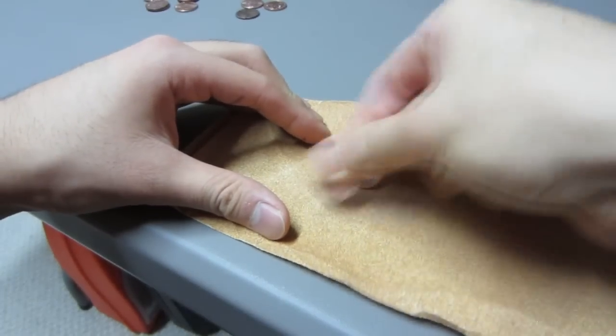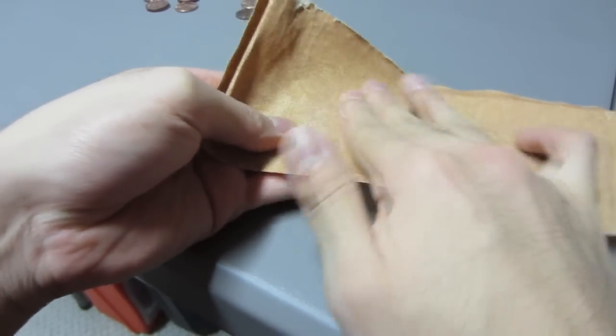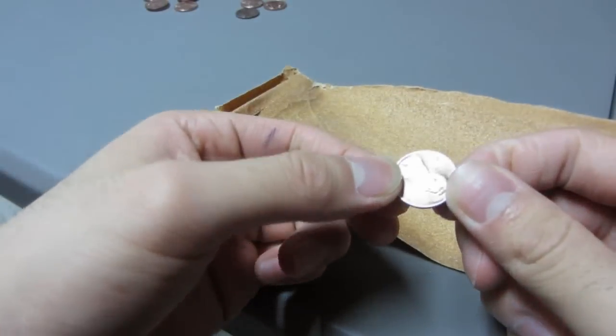Here comes the hard part. Taking some sandpaper, we're going to have to shave away the copper coating that's surrounding the penny to get to the zinc body. Zinc and copper can be used as a redox reaction, so that's how we're going to get our voltage.